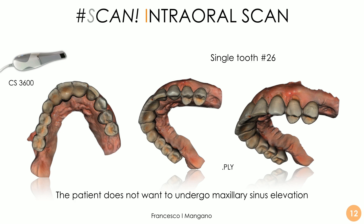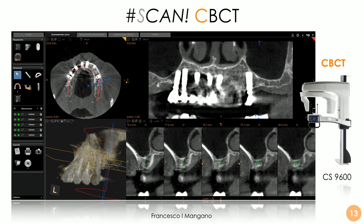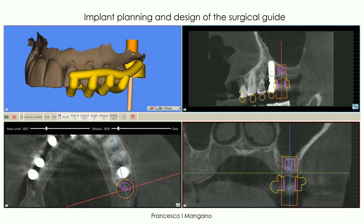Here is another case, scanned with the CS3600. The patient wanted to add one tooth in the upper maxilla on the left — the first molar — but she didn't want to undergo any maxillary sinus elevation. There was the prosthetic space for the tooth, but unfortunately very little bone was available. However, we had the possibility to insert a short implant, and we did it accordingly. The design of the surgical guide was performed inside SMOP using the valuable tools for surgical guide design — once again, implant planning and guide design inside SMOP using the full module.